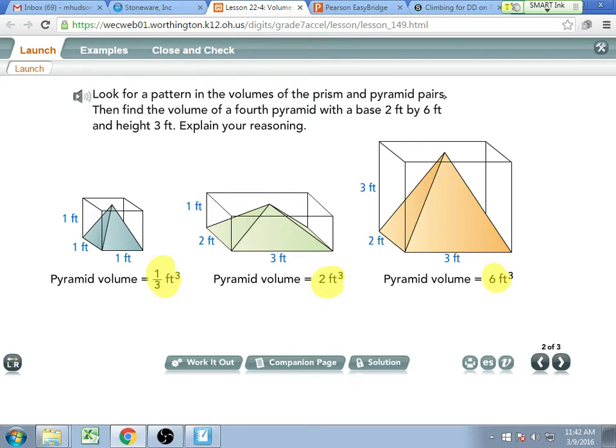We remember that prisms, especially rectangular prisms, volume is really easy to solve. It's just the length times the width times the height. So here, one times one times one, the prism would have been one foot cubed. Here, the volume of the prism would have been three times two times one, which will be six feet cubed. And here, the prism would have been three times two times three. So I'm going to do three times three first gives me nine times two gives me 18. So that would be 18 feet cubed.